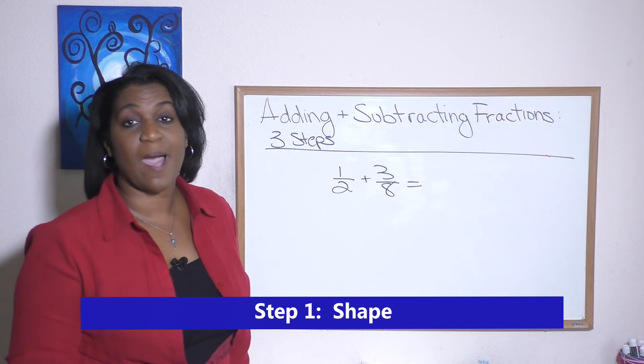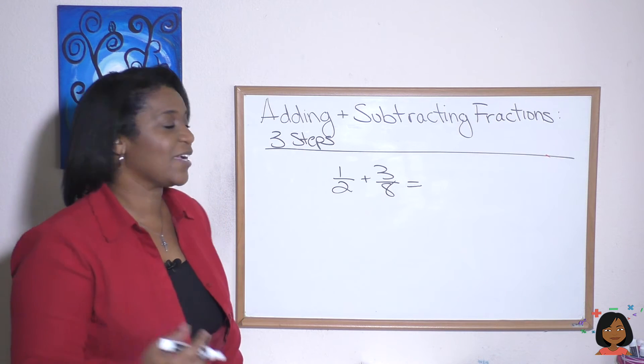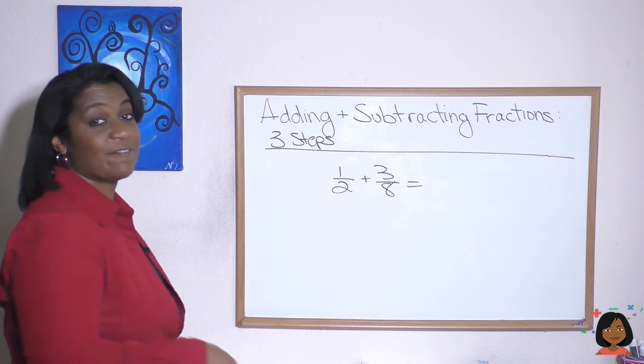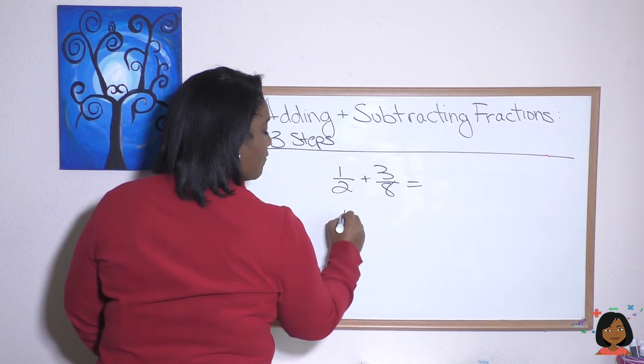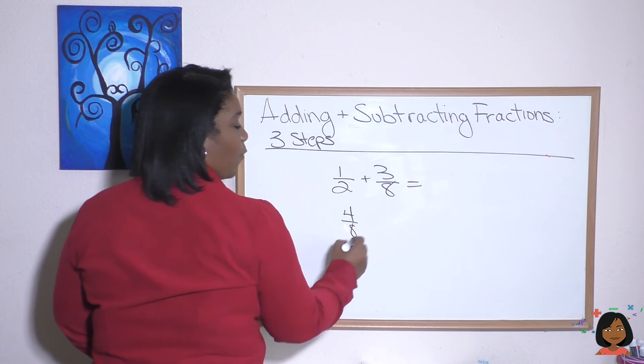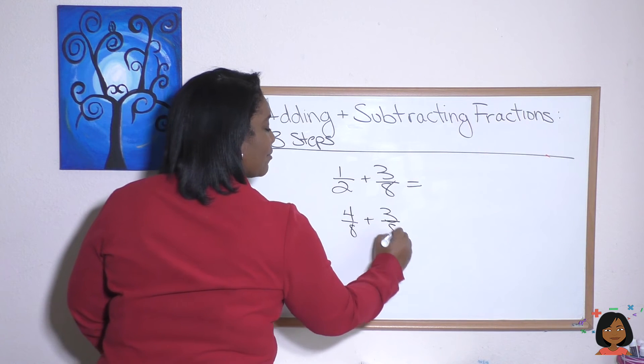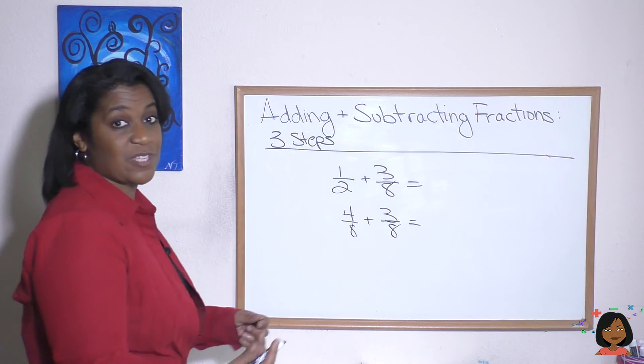Shape. We do not have a common denominator. So let's give it a common denominator. We're going to have eight be our common denominator. So we need to convert this one half. We're going to convert this to four eighths plus three eighths. Okay, that was our shape.